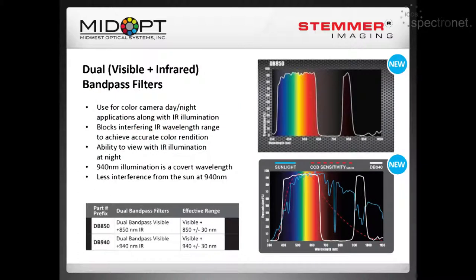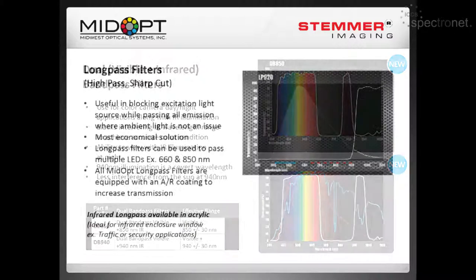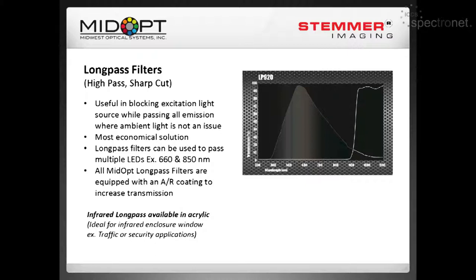We have a series of dual bandpass filters — very popular in the ITS security market. They allow the visible spectrum to pass in a color camera for natural color rendition during the day, and also pass an infrared bandpass so you can use artificial illumination or an IR LED at night. Essentially, it turns your camera into a day/night camera without switching filters. We do have long pass filters as well, though we don't typically recommend them — they're best for passing two or more wavelengths or in a completely controlled area to save cost. We also have acrylic AR-coated long pass filters great for camera enclosures and the ITS market.